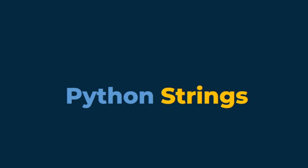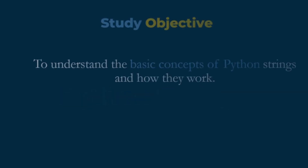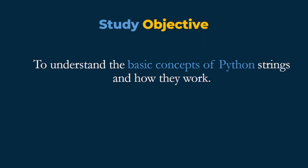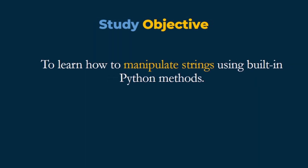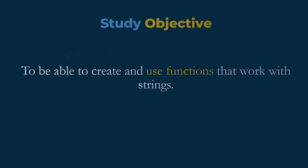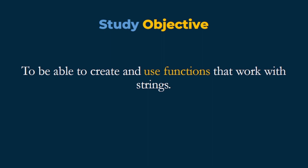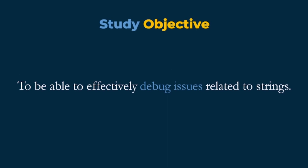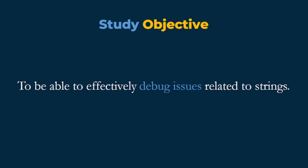We are talking about Python strings. The study objective of this tutorial is to understand the basic concepts of Python strings and how they work. We also seek to learn how to manipulate strings using built-in Python methods, and to identify and use different string objects and their associated methods. We also seek to create and use functions that work with strings, and to effectively debug issues related to strings.